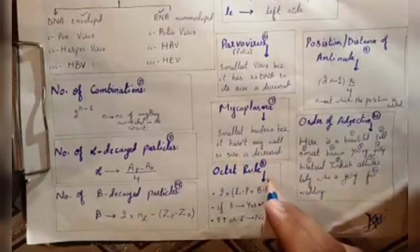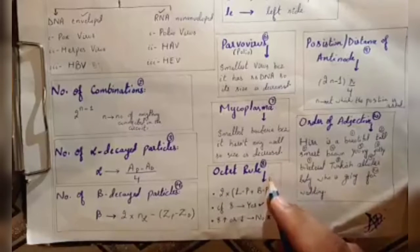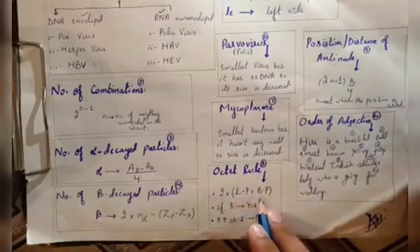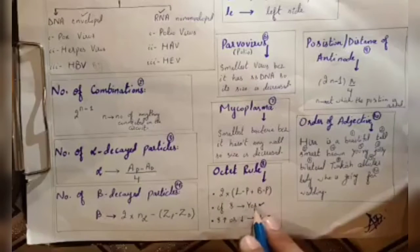You can give 4 options and ask which follows octet rule. Octet rule is having 8 electrons in the valence shell. You have 2 multiplied by lone pair plus bond pairs. If answer is 8, then the compound follows it.